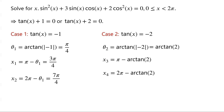The solution in quadrant 4 is 2 pi minus theta 2, which equals 2 pi minus arctan of 2. Arctan of 2 is approximately 63.43 degrees. The solution in quadrant 2 is approximately 180 minus 63.43 degrees, which equals 116.57 degrees. The solution in quadrant 4 is approximately 360 minus 63.43 degrees, which equals 296.57 degrees.